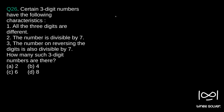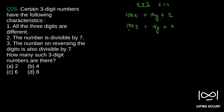This is a relatively tougher question. Since the number on reversing the digit is also divisible by 7, we can write the three-digit number as 100x plus 10y plus z. So we are assuming our first number is xyz, which means 100x plus 10y plus z. On reversing, it will become zyx, or 100z plus 10y plus x.